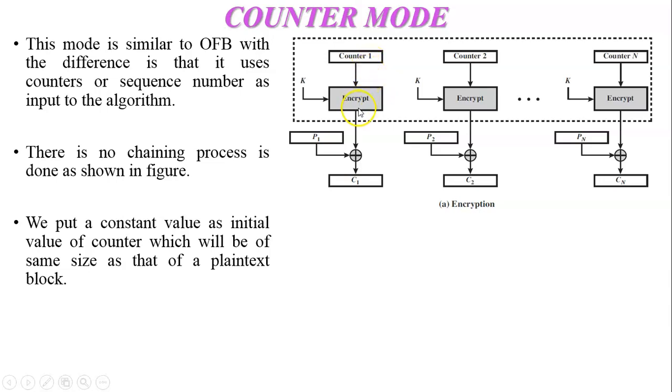So output of the encryption algorithm is given to the XOR process and another input of the XOR process is the plaintext block P1. The size of P1 is 64 bits and it generates C1 ciphertext one of 64 bits. Now later on in the second process another counter two is used as an input of the encryption algorithm and the same key is used for every ciphertext generation.